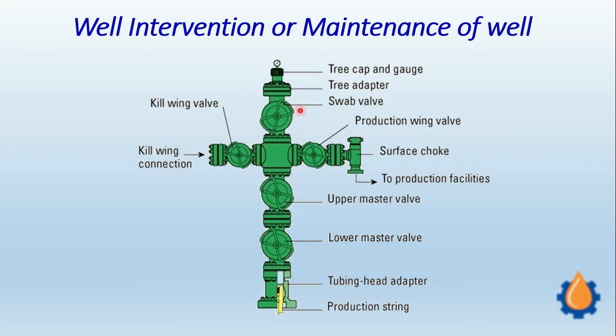This is the production tree, and this part of the production tree is mounted on the well head. The well head is connected to the production piping or tubing, which moves all the way to the hydrocarbon reservoir. On the top side of that production tubing we have the well head, and on the well head the production tree is fitted.